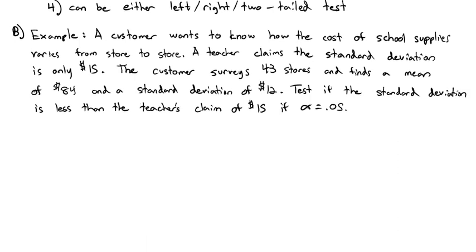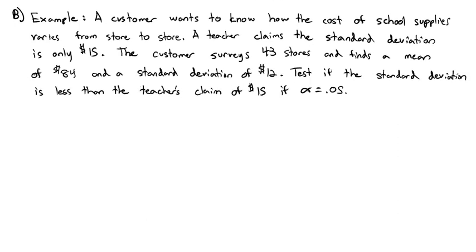So we've got a claim about the standard deviation. The claim is the standard deviation is $15. But notice that's the standard deviation, not the variance. The variance is the standard deviation squared. So when we set up our null hypothesis, our null hypothesis will state that the variance, or sigma squared, is equal to the standard deviation squared, or 15 squared, which is 225.